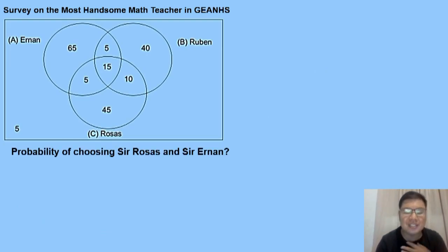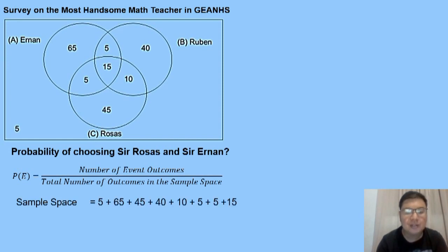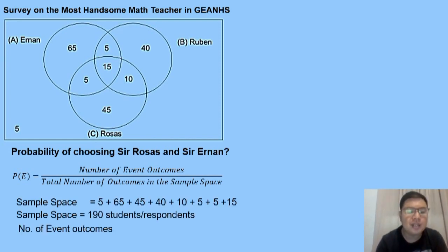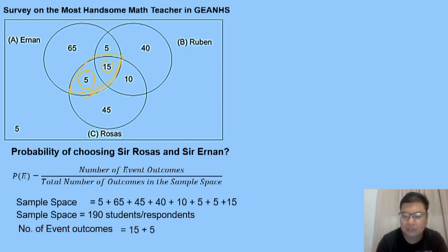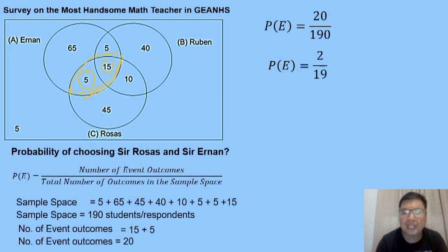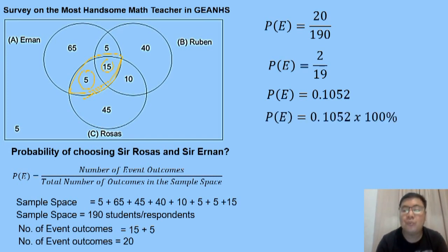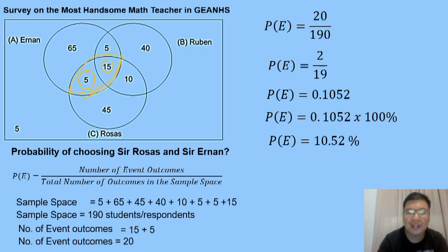Next: probability of choosing Sir Rosas and Sir Ernan. Same formula and sample space. We find the intersection of Sir Ernan and Sir Rosas: 5 plus 15 equals 20. So 20 over 190, lowest term is 2 over 19, which gives the same answer as before — 0.1052 multiplied by 100% is 10.52% probability of choosing Sir Ernan and Sir Rosas.